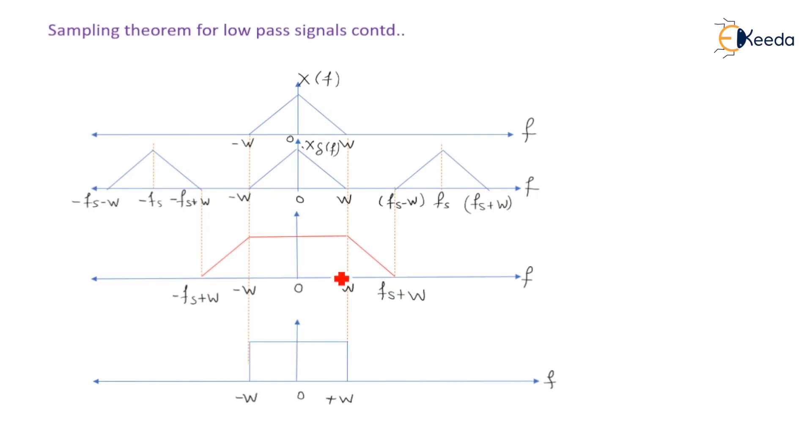Here the reconstruction filter we can get with respect to the reference value that minus fs + w and fs + w. Finally, at the output of the low pass filter, we will get the original x(t) signal recovered, which is spread in between minus w to plus w.